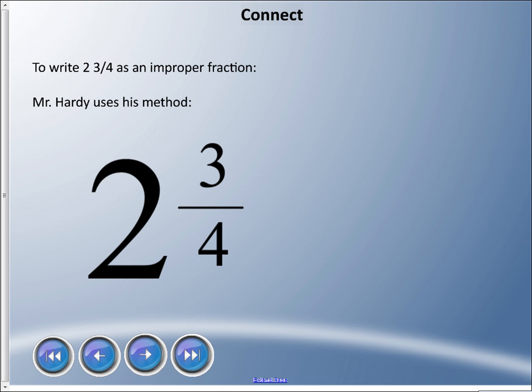This is a process where we multiply one step and we add. We're always going to multiply the denominator by the whole number—that's two—so four times two, and that is eight.